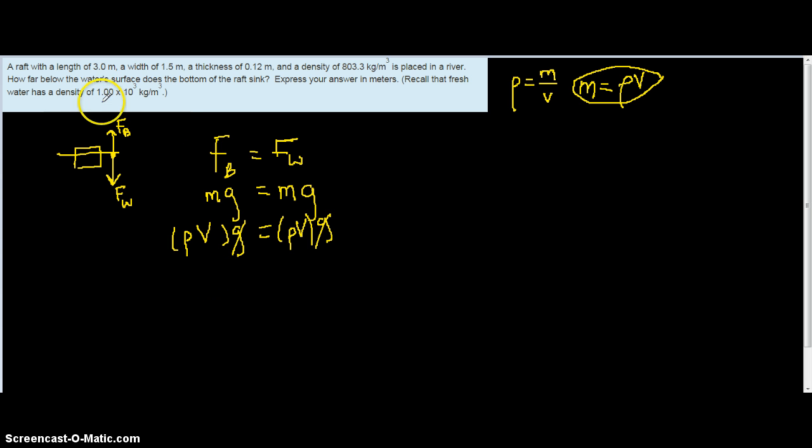We know the density of water is 1,000, 1 times 10 to the third kilograms, so 1,000 goes right here. The density of the raft is 803.3, okay, and then, of course, multiplied by its volume.